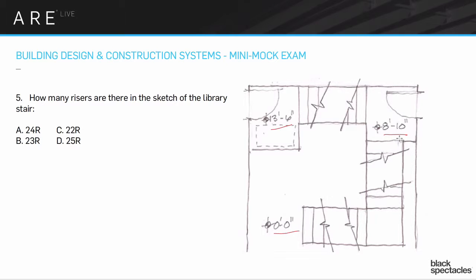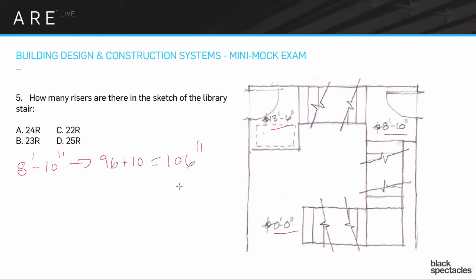We have a full run of 8'10", so we start thinking: 8 times 12 is 96, plus 10, so that's a vertical run of 106 inches. Our total vertical rise from the ground floor up to this level is 106 inches. The first thing we're going to do is divide 106 by 7.